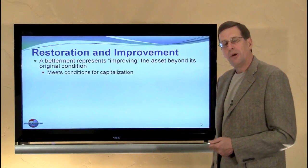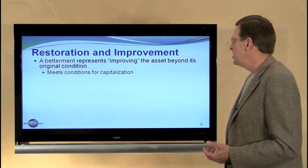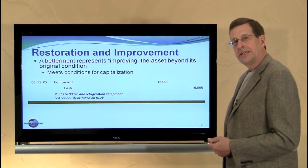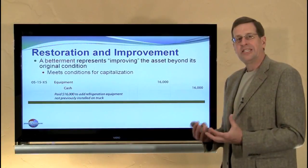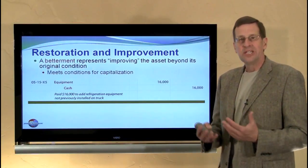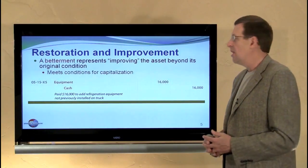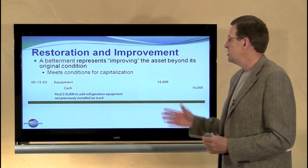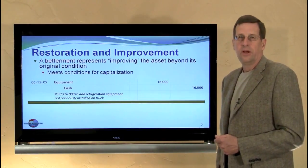If we compare that to a betterment, we're going to improve the asset beyond its original condition. It meets the conditions for capitalization, but I'm going to debit the equipment account. In this case, I'm adding refrigeration equipment to a truck that was not previously refrigerated. That's different than replacing the engine where we're restoring the original condition. Here we're actually extending the quality of the asset beyond its original condition — it's termed a betterment. It's also a capital expenditure, recorded in this way.